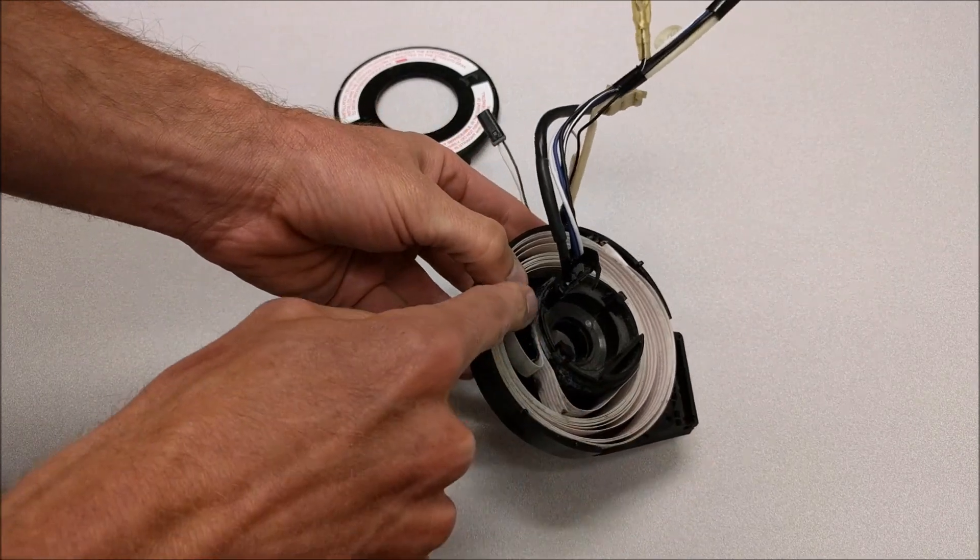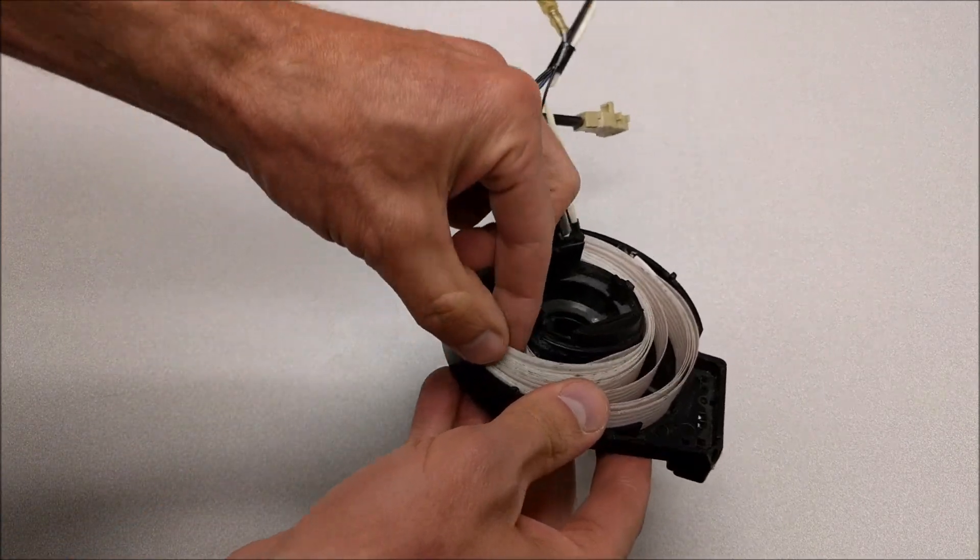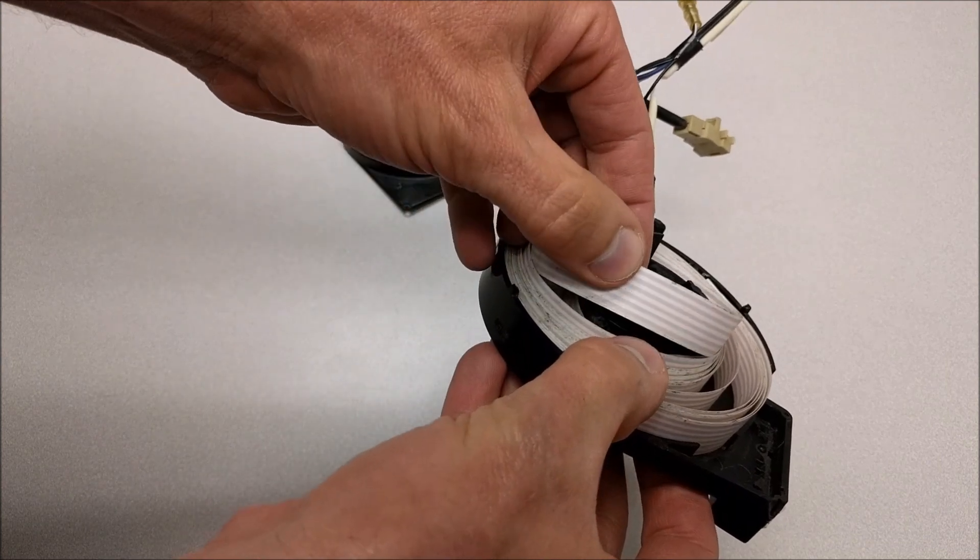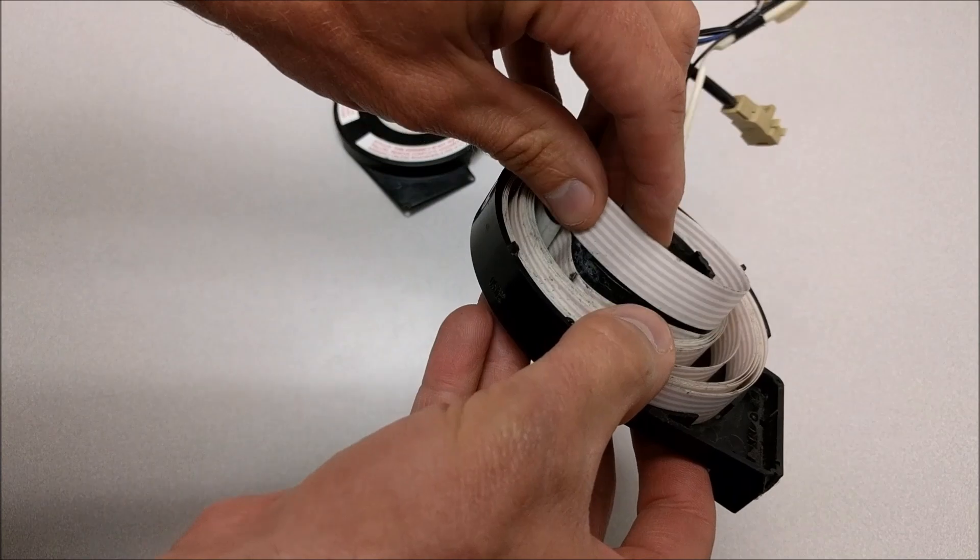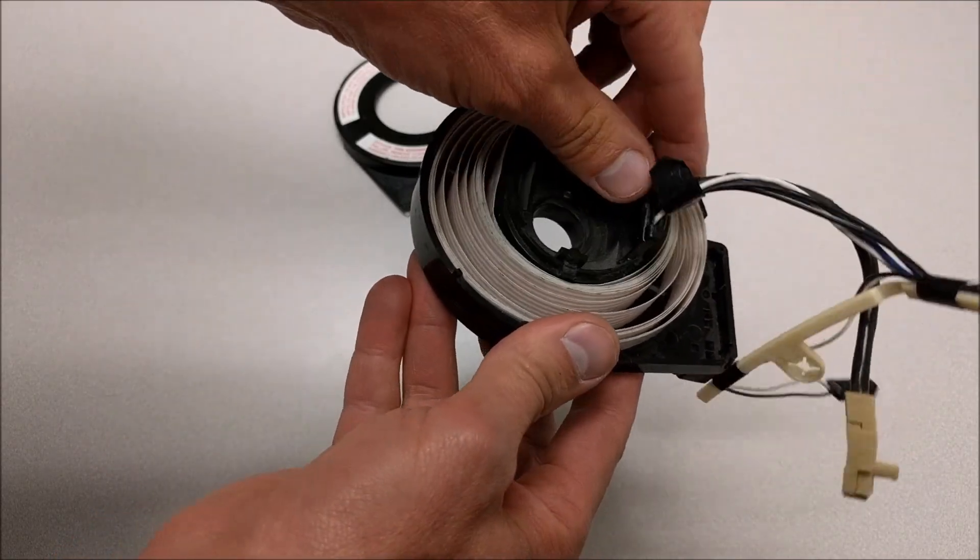You'll notice that it's connected to a ribbon here. And this is a ribbon of conductors. If you look at it you can see several conductors or wires that are built into that ribbon. And that's what allows it to rotate.